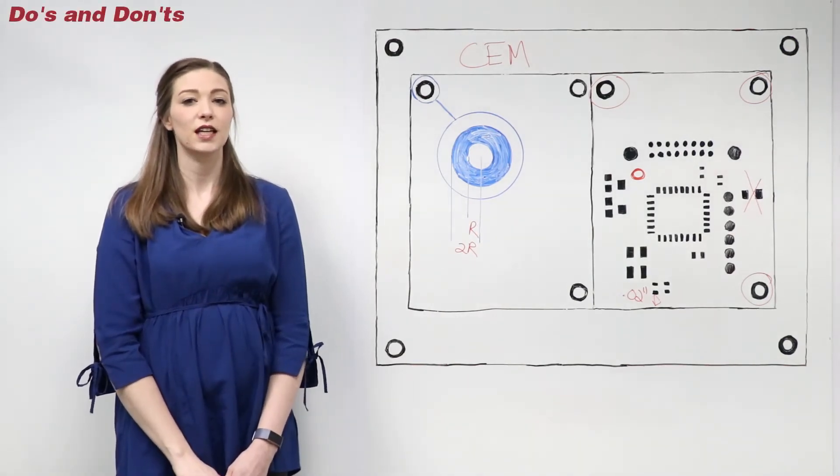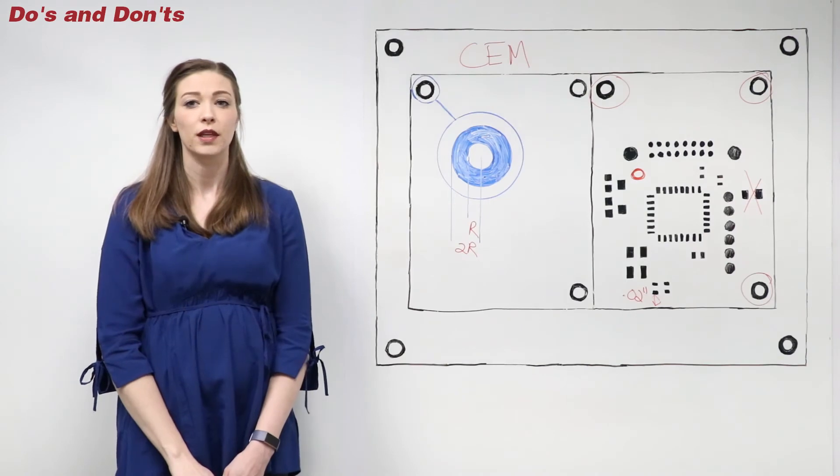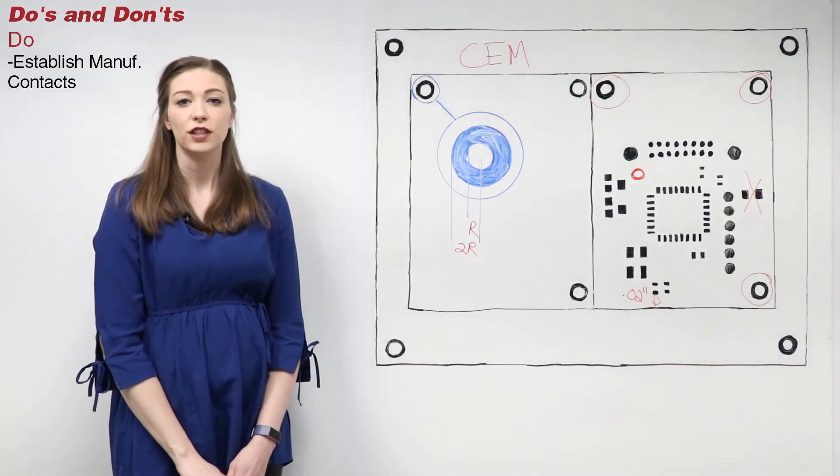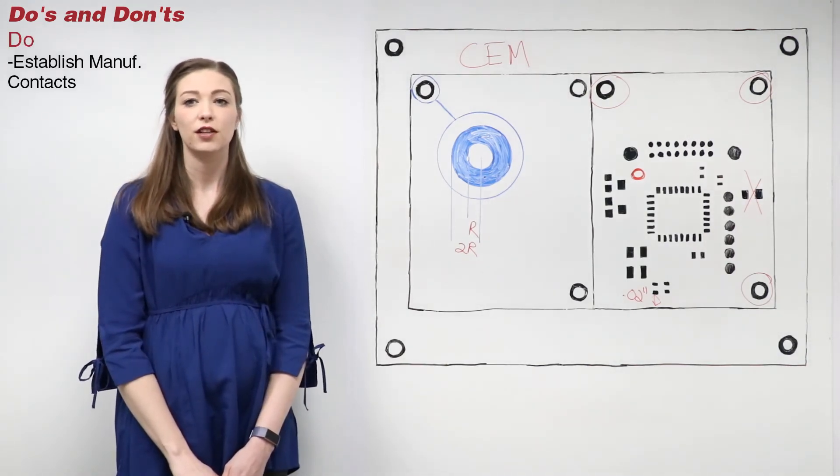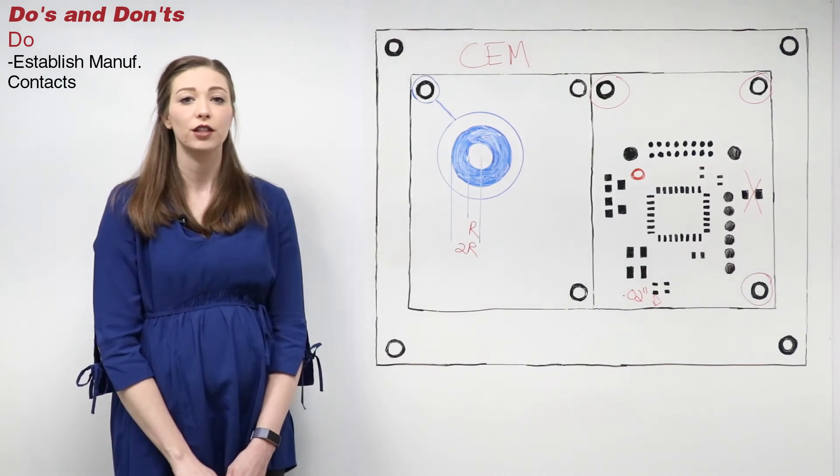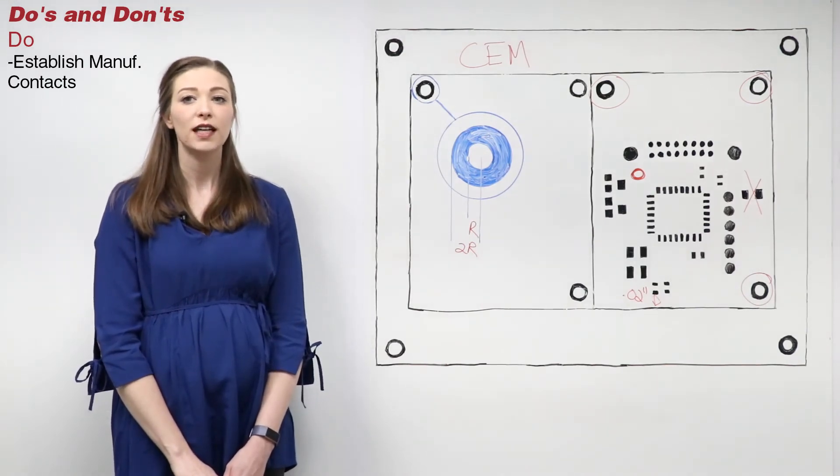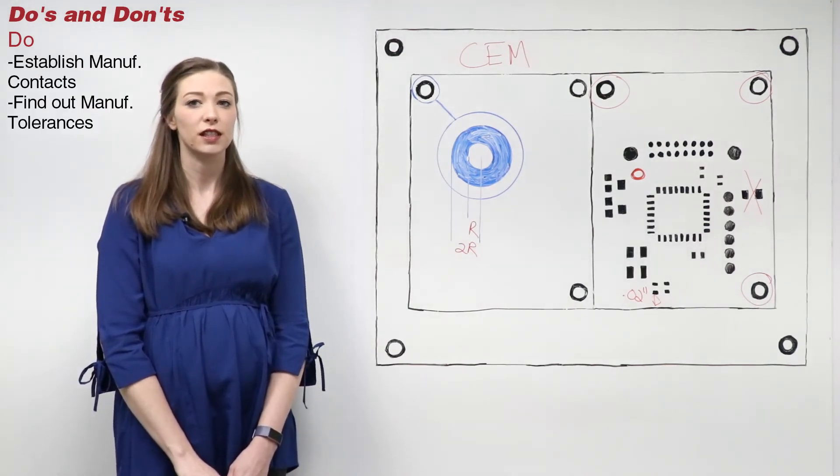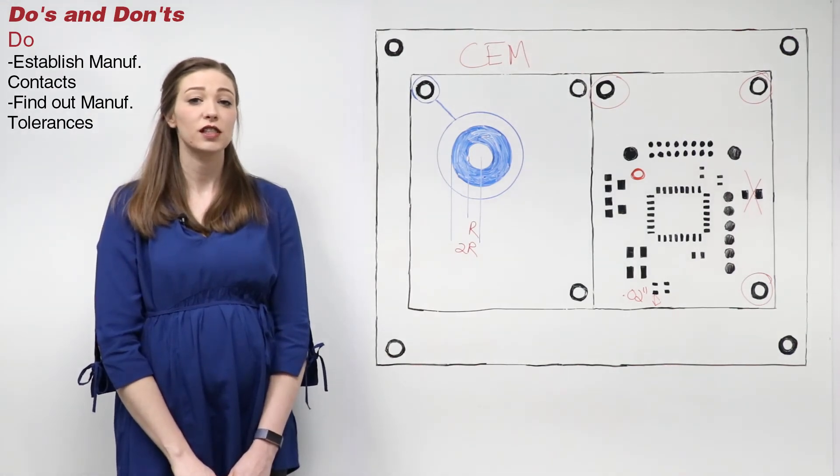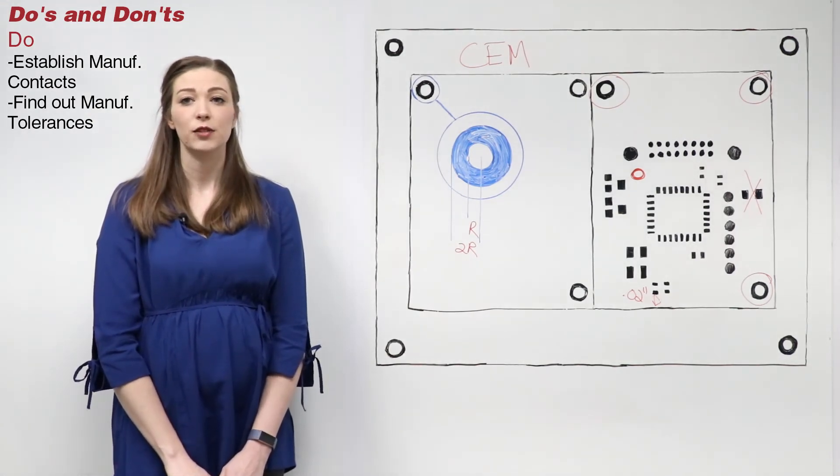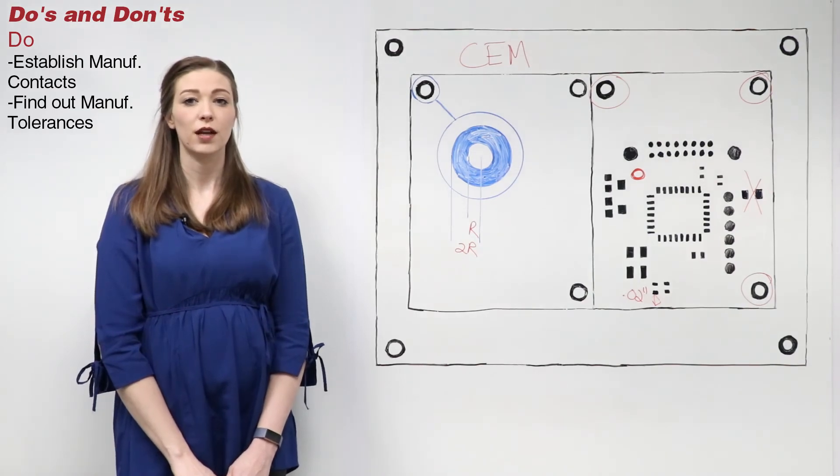Here are some do's and don'ts when designing for manufacturing and assembly. Do establish manufacturing contacts. They will be able to answer any questions before and during manufacturing. Do find out the manufacturer's specific tolerances. Many manufacturers have different tolerances they can produce. These affect spacing, vias, drill holes and more.